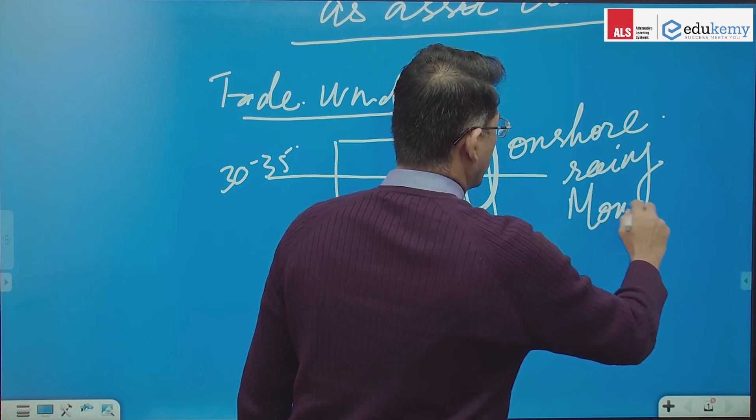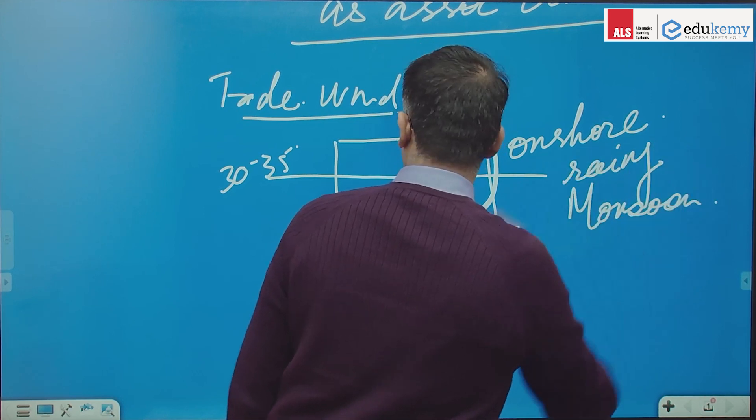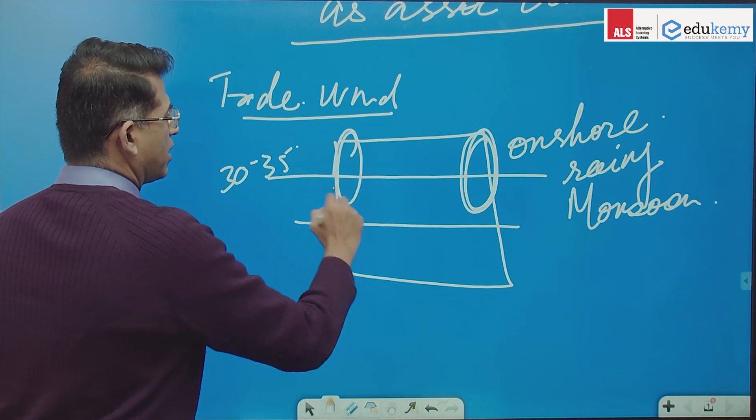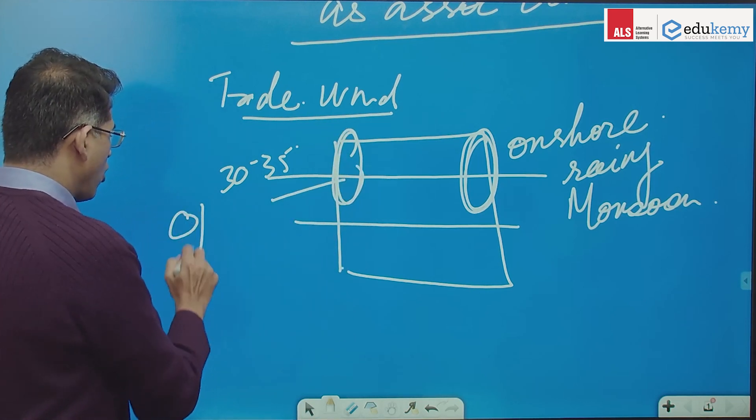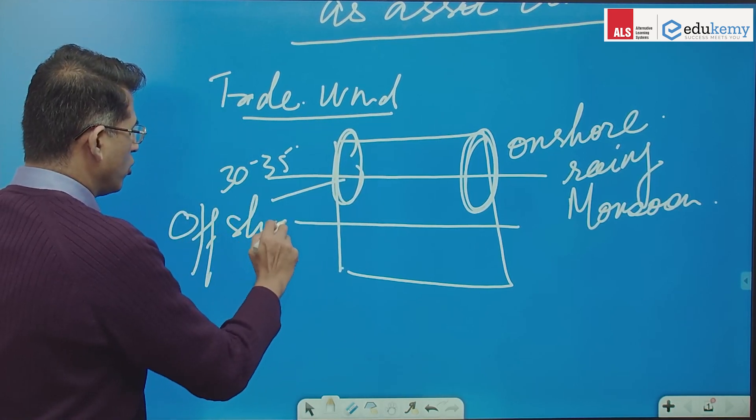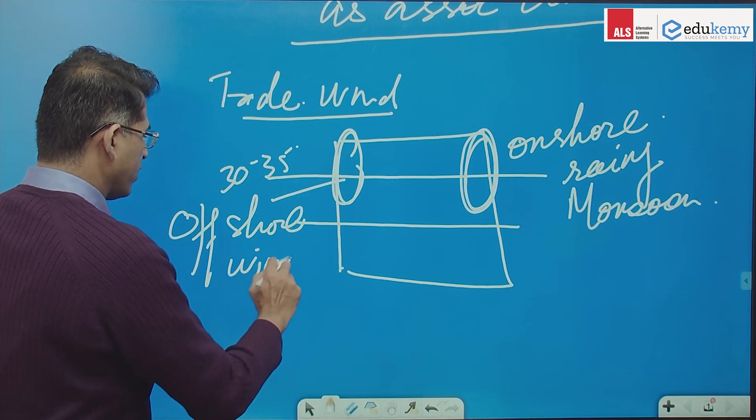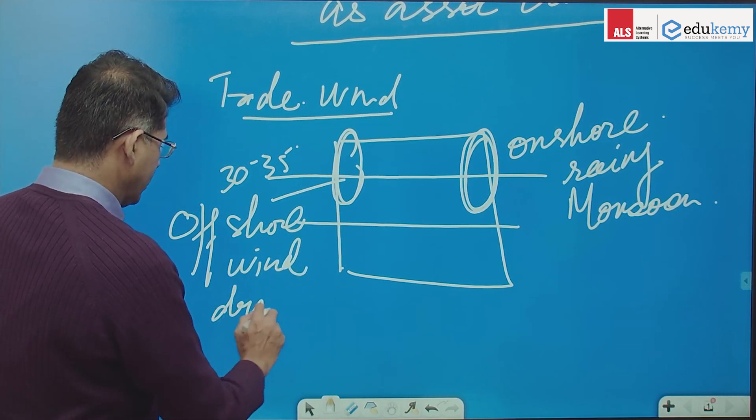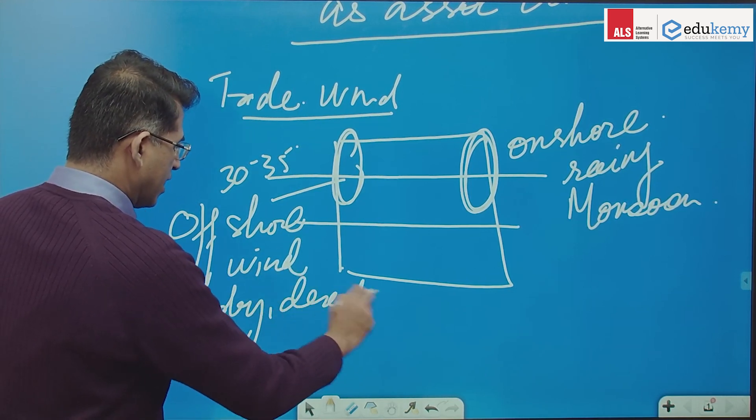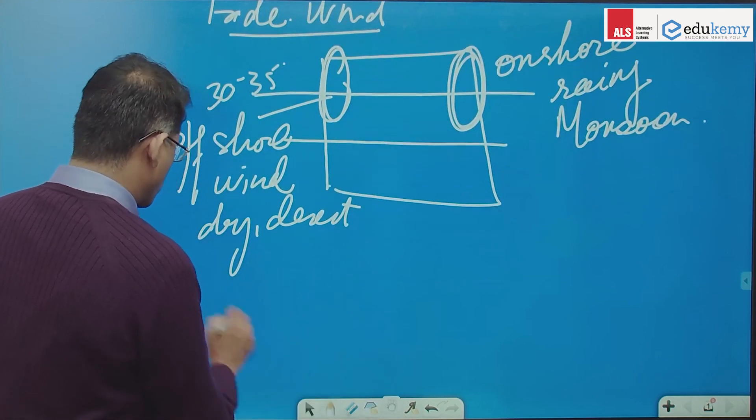it has monsoon climate and this part, this is offshore winds, it is dry, it is desert and it is cool,